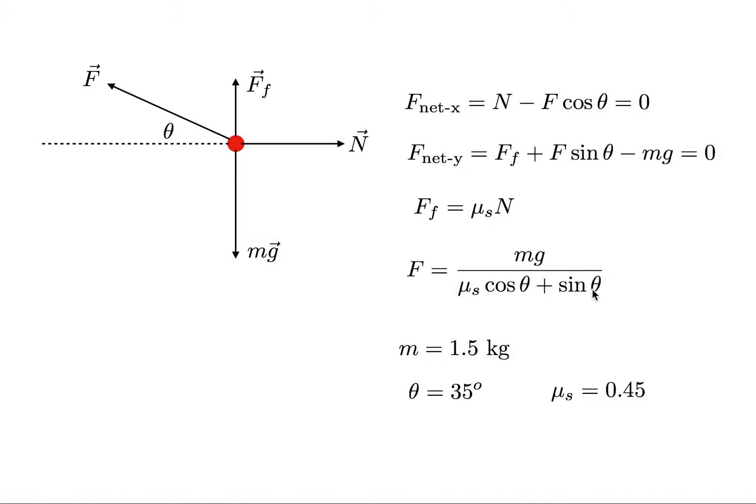If I push at an angle of zero degrees, cosine of zero is one, sine of zero is zero. So I get mg over mu s. That's actually a problem we did before, and you get the same thing. If I push straight up, there's going to be no friction. So the force I push up is going to have to be equal to the weight. And so if you put in theta equals pi over 2 or 90, then this is zero and that's one, and I get mg. So boom, that works.